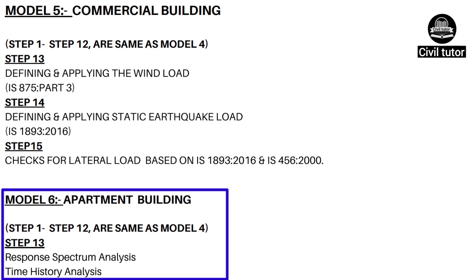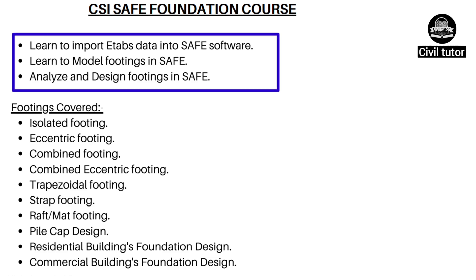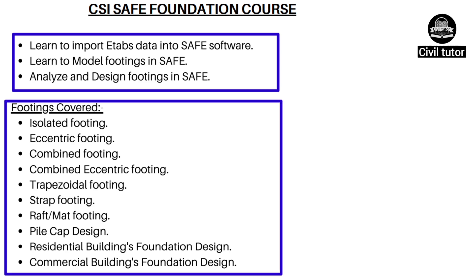Model 6 will be of an apartment building, which includes all 12 steps of Model 4, plus response spectrum analysis and time history analysis. Talking about the content provided in the SAFE foundation course, you will learn to import ETABS data into SAFE software, model footings, and carry out the analysis and design of footings. The various types of footings include isolated footing, eccentric footing, combined footing, combined eccentric footing, trapezoidal footing, and all other footings which you can visualize from the PDF.